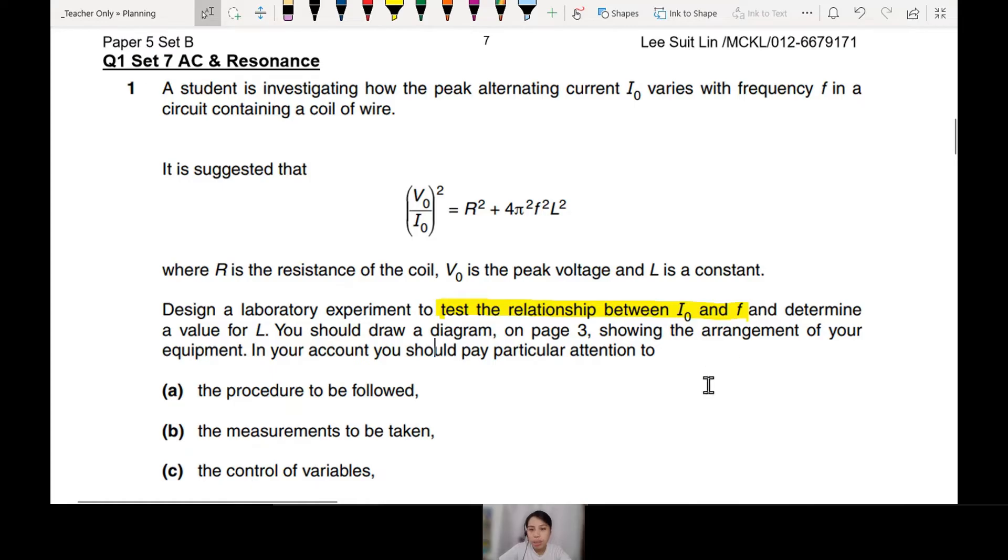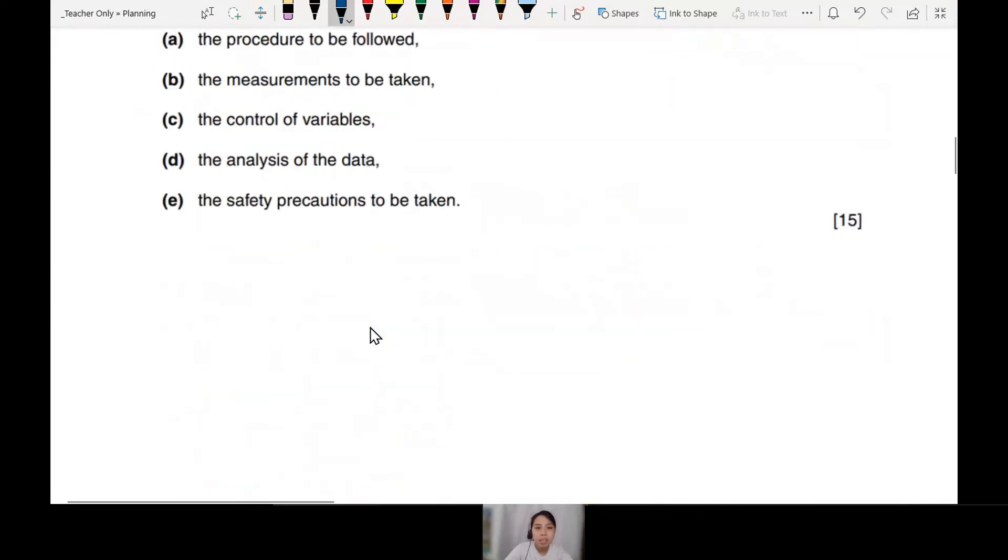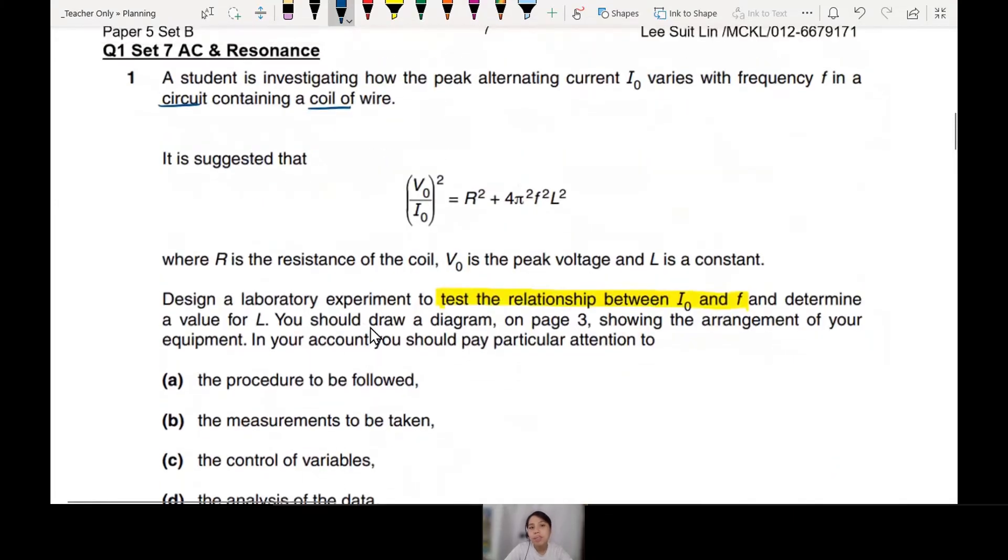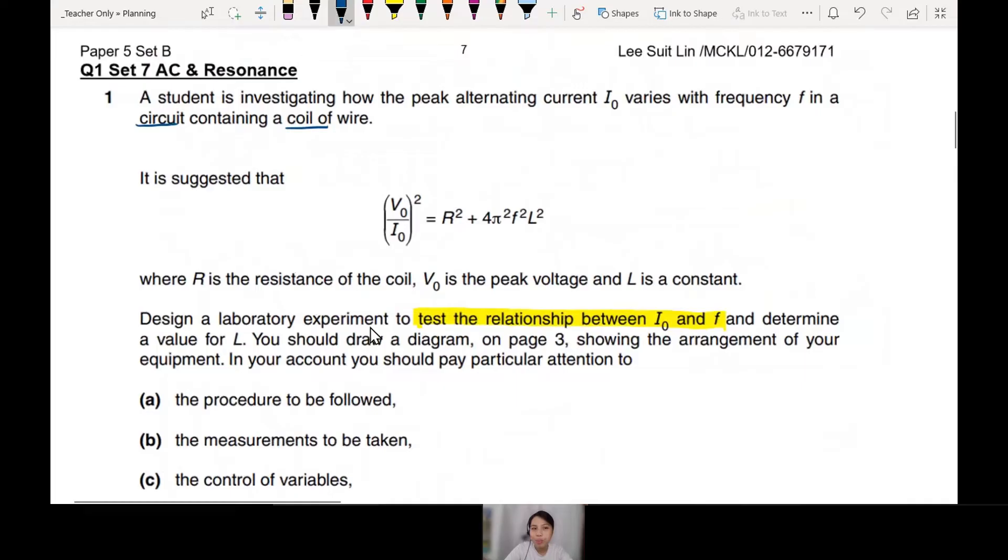Straight away, they show you already. So the whole experiment will be on I₀ and F. We are using a coil circuit. Here are some keywords: coil, circuit, coil letter plus draw. And that's pretty much it. There are some experiments that don't give a diagram, you have to think of your own.